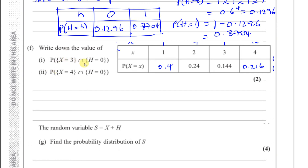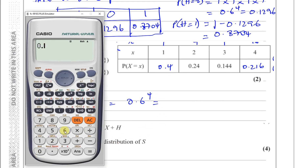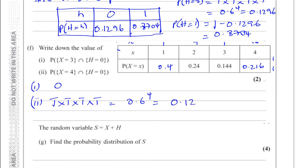Part F says: write down the value of the probability of X equals 3 intersection H equals 0 — the probability that there were three throws and no heads. That doesn't make sense, because if there were three throws the last one must have been a head for the experiment to stop at three throws. So that probability is zero. But the probability that X equals 4 and H equals 0 — four throws with no heads, meaning four tails — is 0.6 to the power of four, which gives 0.1296.